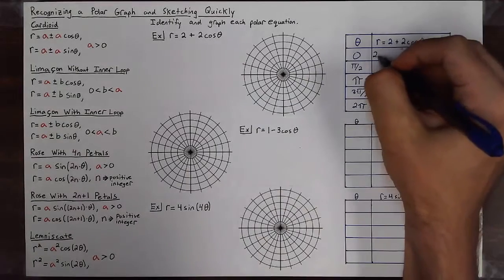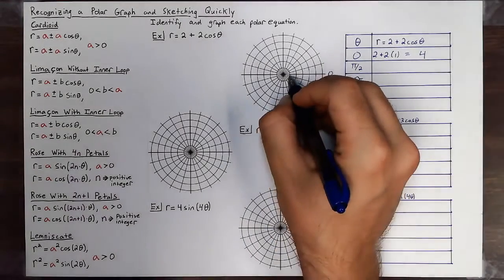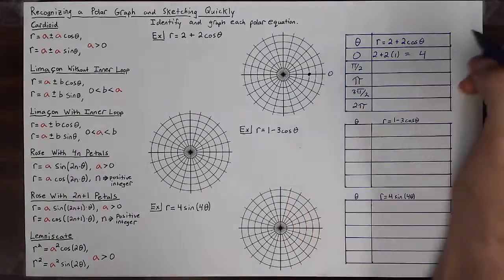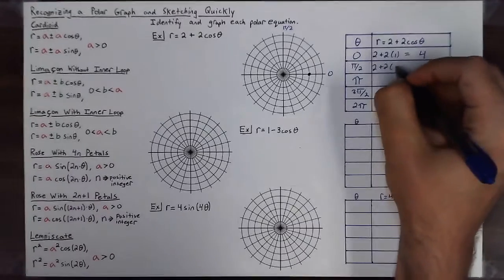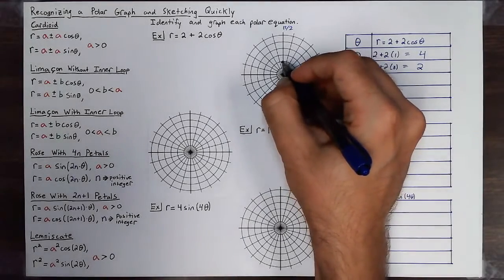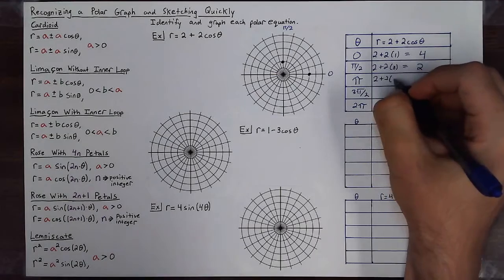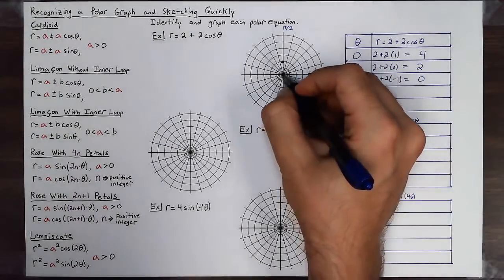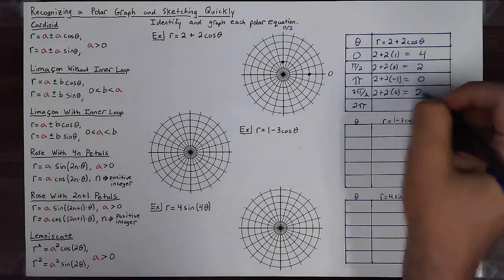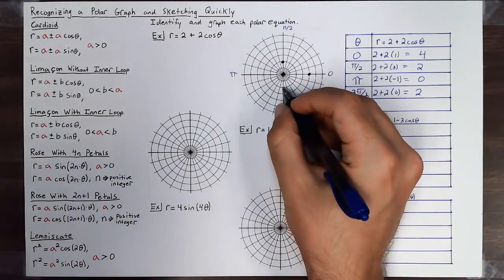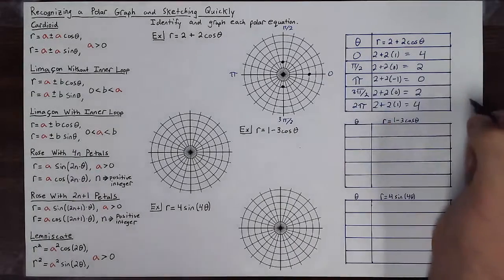I'll pick five key points on the domain of cosine: 0, π/2, π, 3π/2, and 2π. Plugging in 0: 2 + 2·cos(0) = 2 + 2·1 = 4, so there's a point at angle 0, radius 4. At π/2: 2 + 2·cos(π/2) = 2 + 0 = 2. At π: 2 + 2·cos(π) = 2 + 2·(−1) = 0. At 3π/2: 2 + 2·cos(3π/2) = 2 + 0 = 2. At 2π: 2 + 2·cos(2π) = 4 again.